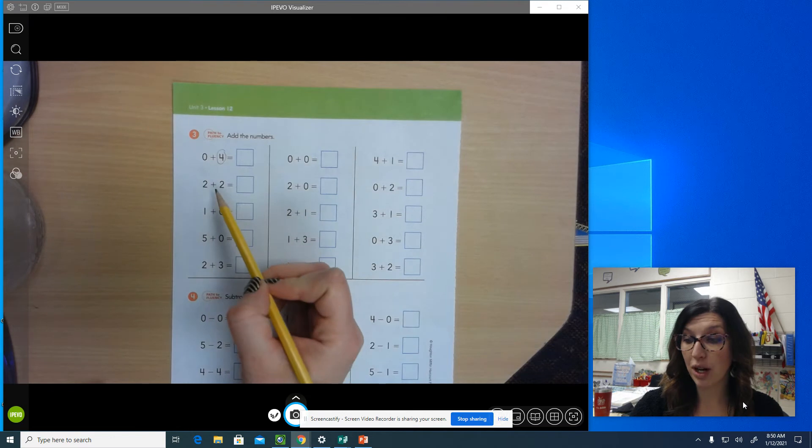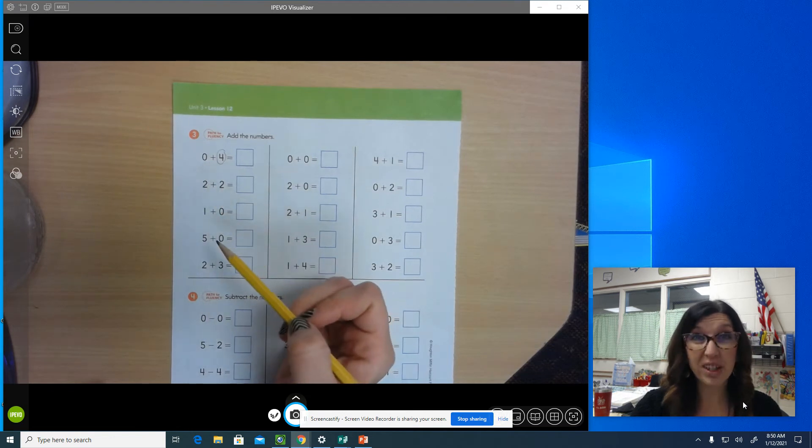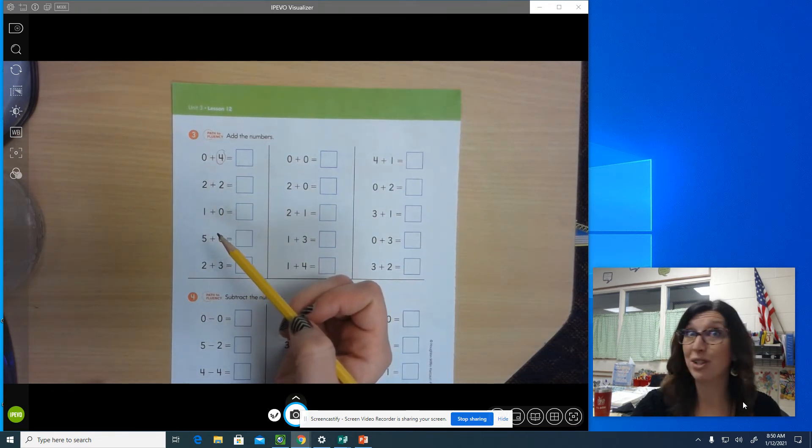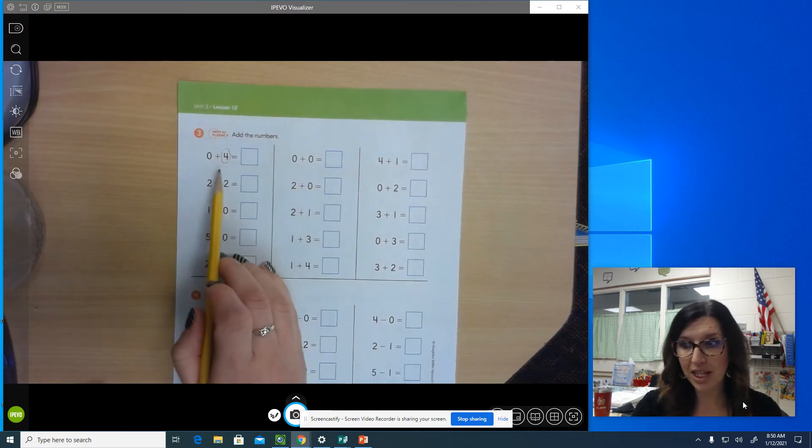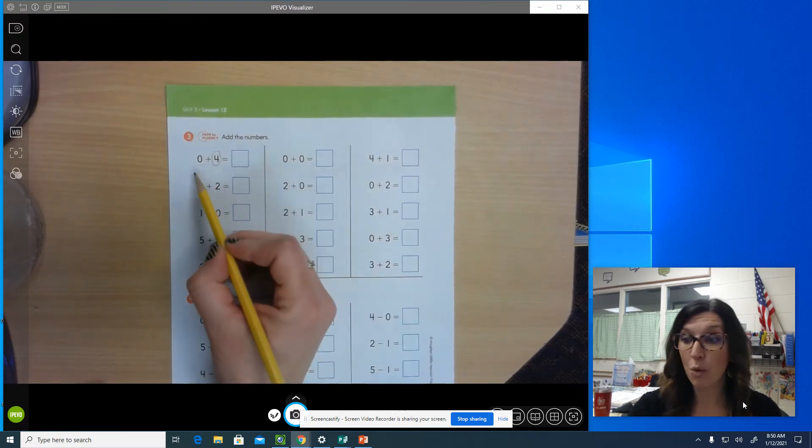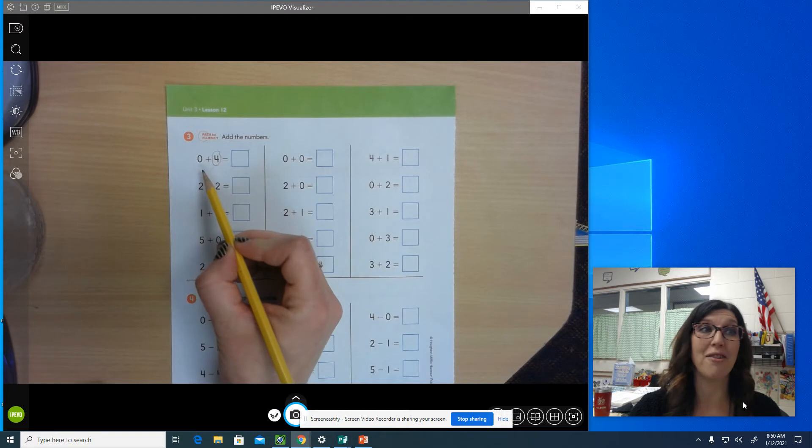Then I'm going to look at the other number and I'm only going to draw dots for the other number. I don't have to draw dots for both. Well this one's really easy because we don't have any dots to draw for the zero because zero means there's no dots.